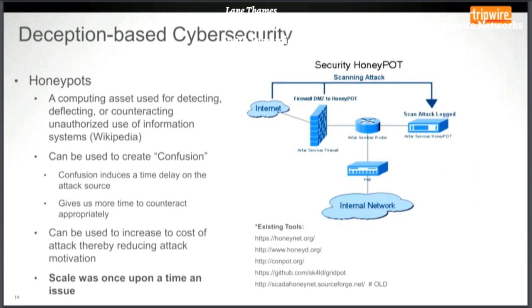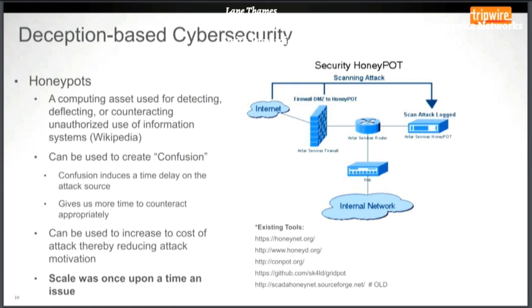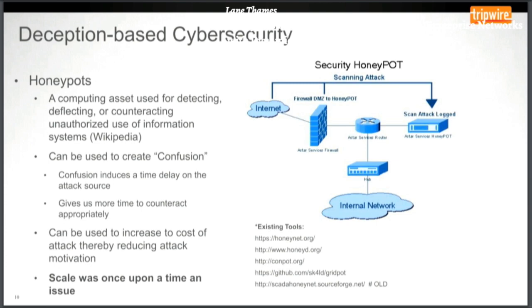When we talk about deception-based cyber security, the traditional technology has been a honeypot — basically a computing asset used for detecting, deflecting, or counteracting unauthorized use of information. They've traditionally been used to detect activity and fool the attacker. Once that honeypot is accessed, the IT or security department knows something is wrong because that system shouldn't be accessed.